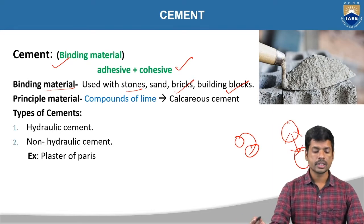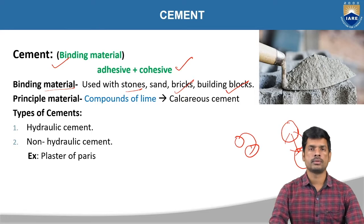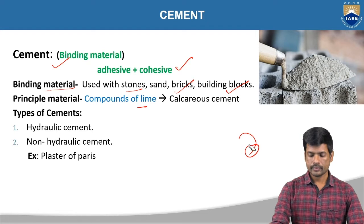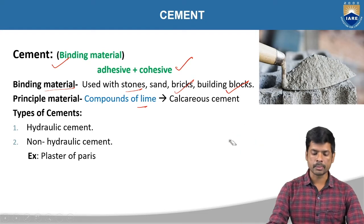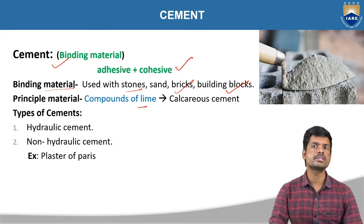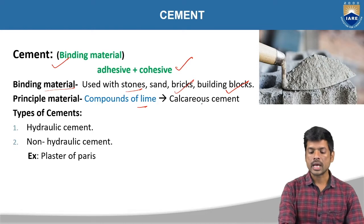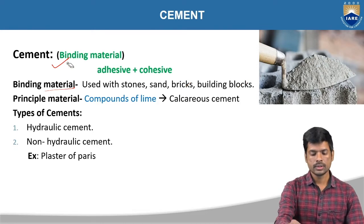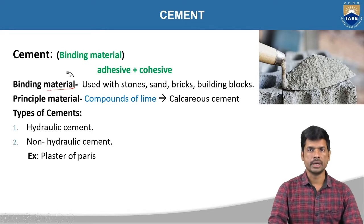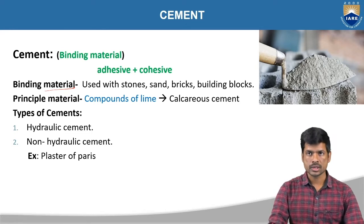The principal material in the compounds in cement is compounds of lime. This is the principal material — compounds of lime is the major material present in cement, and in that, majorly calcareous cement. That is why it is called calcareous cement, because lime is also called calcareous material.